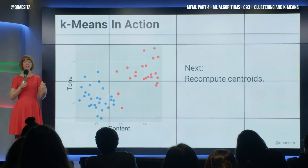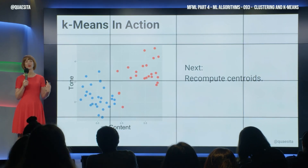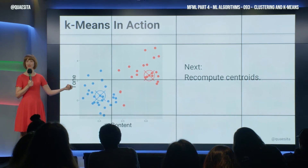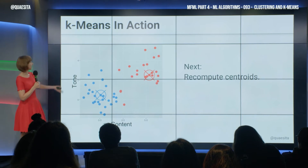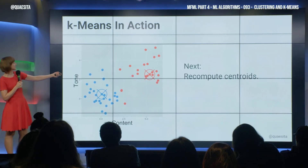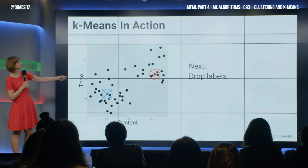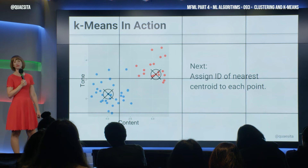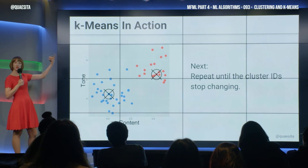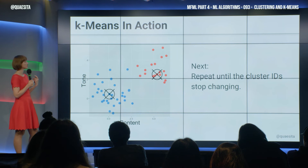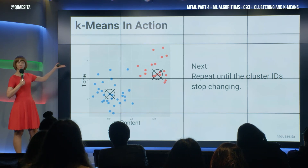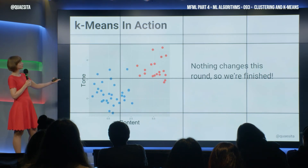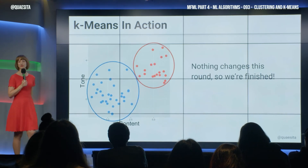Let's recompute the centroids and take a moment to guess where they're going to be — far apart or close together? Far apart. You kind of get what these things are now. And again, we forget the labels, and again, we do the same thing: ID of the nearest centroid. And then we go round and round doing the same thing until the clusters stop changing. Spoiler alert, there will be no further changes. This is the last solution. Round and round, nothing changes. These are our clusters. Job done. That is k-means.